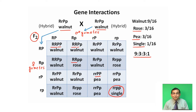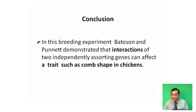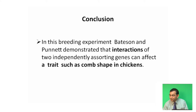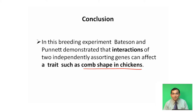In this breeding experiment, Bateson and Cunet demonstrated that interactions of two independently assorting genes can affect a trait, such as comb shape in chickens. So here, multiple gene interaction is responsible for a specific character, that is, comb shape in chickens.